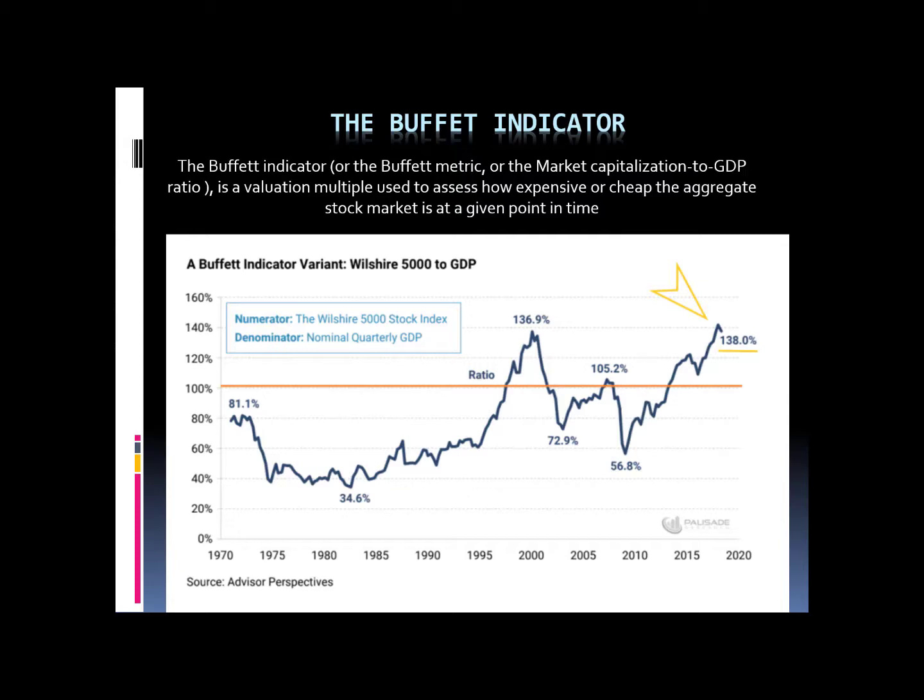As you can clearly see in the market, when we reached the end of 2020 to the beginning of 2021, it was already above the tech bubble of 2000. So you can see here how the Buffett indicator is telling us that stocks are really overvalued.